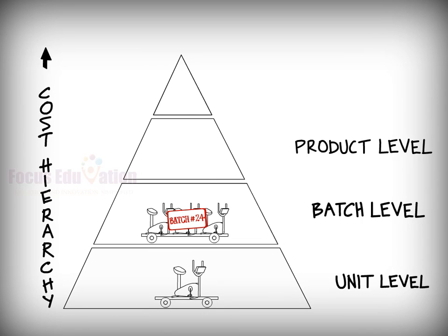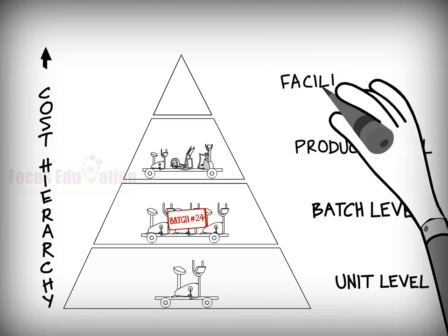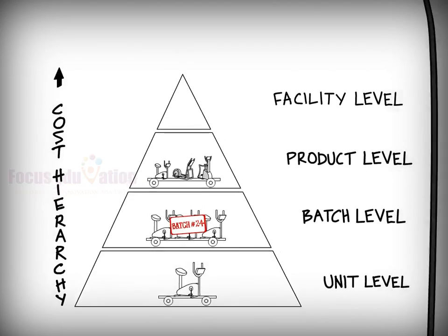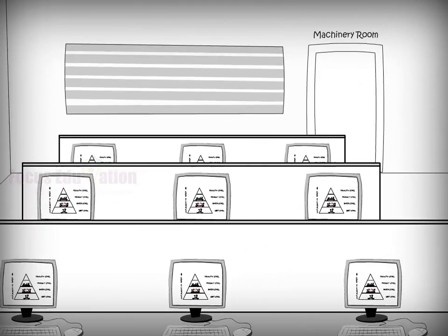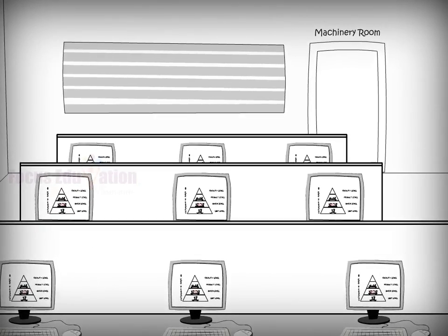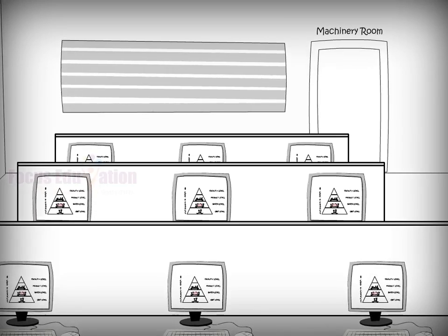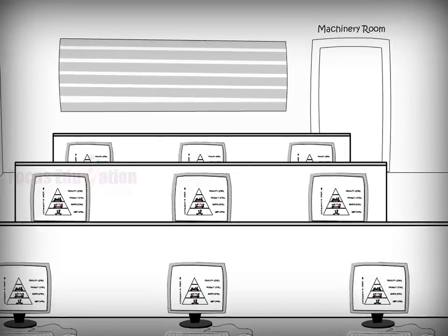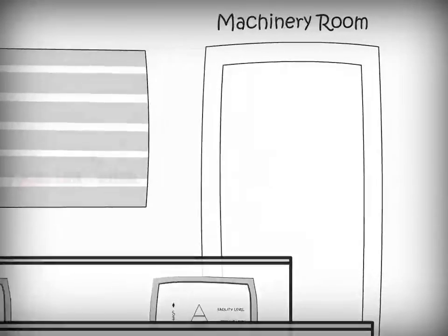By considering how the costs of different activities are consumed, Life Fitness determines a four-step procedure to compute the activity's cost for producing its core fitness equipments. As part of the first step, the company identifies its primary activities and estimates the total manufacturing overhead costs associated with each activity.